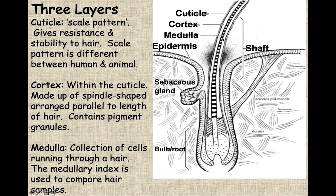Right down the middle of the hair you have what's called the medulla. The medulla is useful for determining animal versus human hair. Humans don't usually have a medulla — out of 19 or 20 students, you might only have three or four with a medulla pattern. It doesn't mean anything good or bad; it just may not be there. The medulla is a collection of cells organized down the center of the strand. We look for diversity human-to-human and human-to-animal.